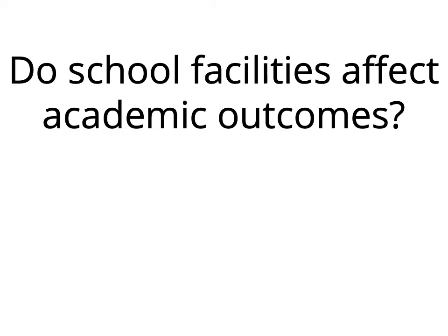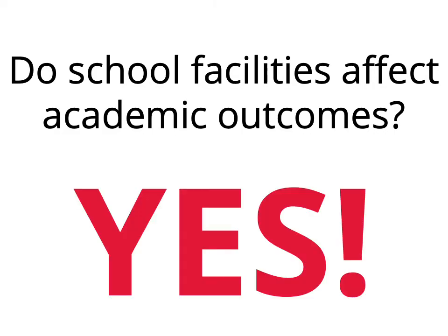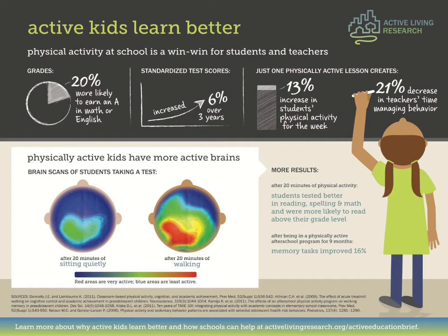This may cause you to ask: do school facilities actually affect academic outcomes? The answer is a clear yes. In addition to aspects such as daylighting and environmental comfort, which have been proven to improve student performance, a student's ability to be active can have a dramatic impact as well. It has been shown that physically active students are 20% more likely to earn an A, it leads to increases in standardized test scores, and it reduces teachers' time spent managing kids' behavior by up to 21%. This is just one of the factors that could be improved through facilities.